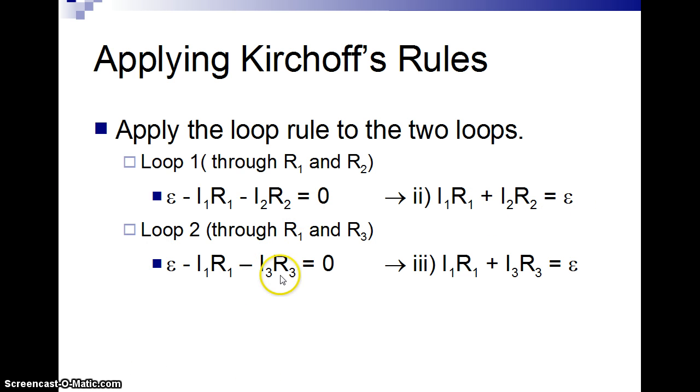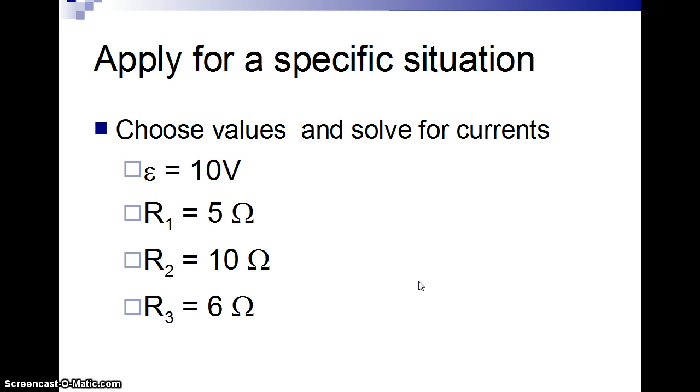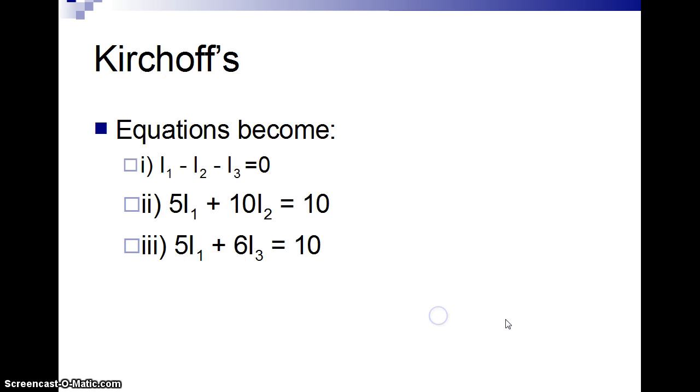Then if we go around the outside, instead of going through resistor two, we go through resistor three. So the battery is going to be equal, the battery is added. Then the two resistors are subtracted. So we have I1, R1 and I3, R3 equal the battery voltage. So that's three equations. So let's look at some possible values here. Let's say it's a 10 volt battery and we have these three resistances. So my equation becomes I1 minus I2 minus I3 equals zero. And then when I replace R, we get 5I1 plus 10I2 equals 10, and 5I1 plus 6I3 equals 10.